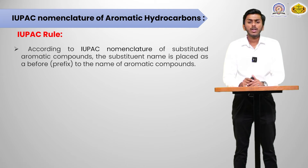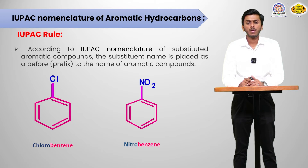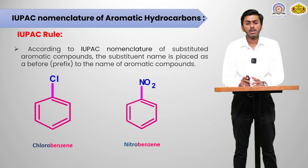IUPAC rule: according to IUPAC nomenclature of substituted aromatic compounds, the substituent name is placed as a prefix before the name of the aromatic compound. For example, chlorobenzene — the chloro is the substituent here. Nitrobenzene — the nitro group is the substituent on the benzene. That is why it is placed before benzene.